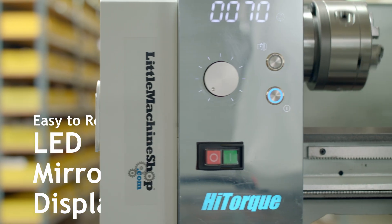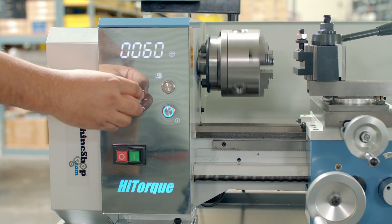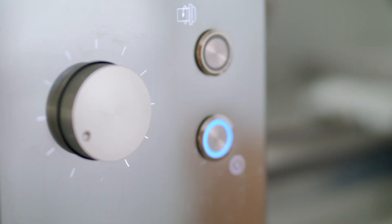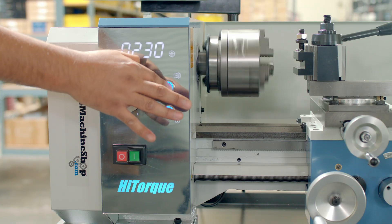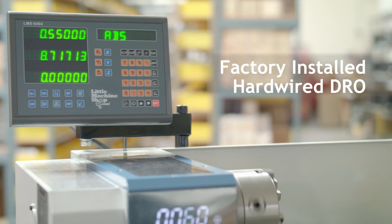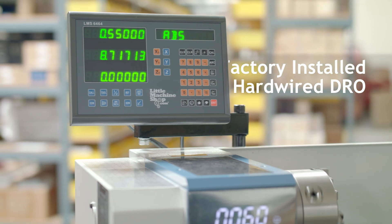Most noticeable on this lathe is an easy-to-read LED display with built-in spindle speed readout, on/off button, and spindle forward and reverse button, adjusting the lead screw direction on the fly. A new factory-installed hardwired DRO on the cross-sliding carriage provides highly accurate measurements.